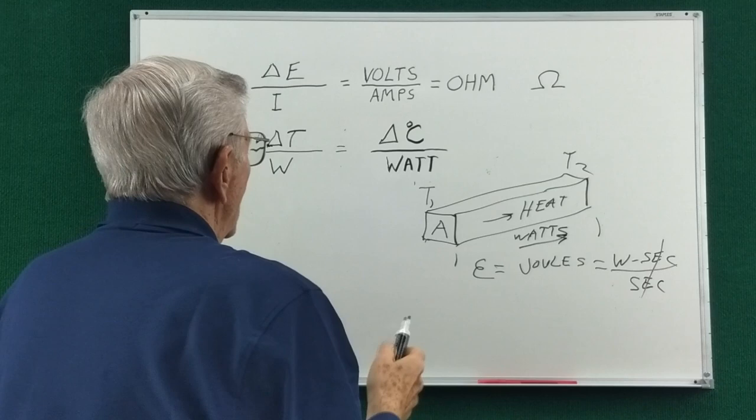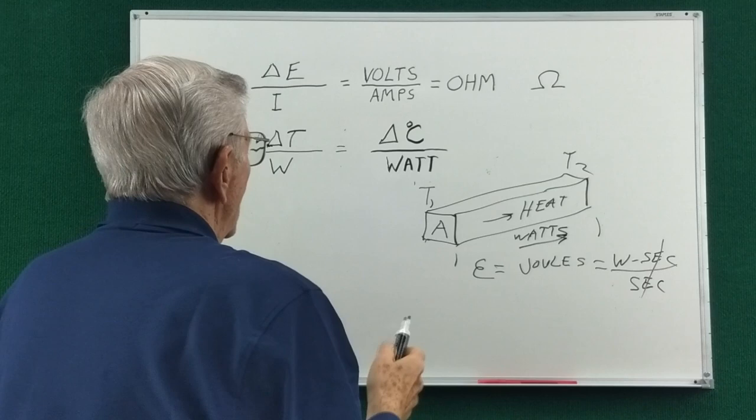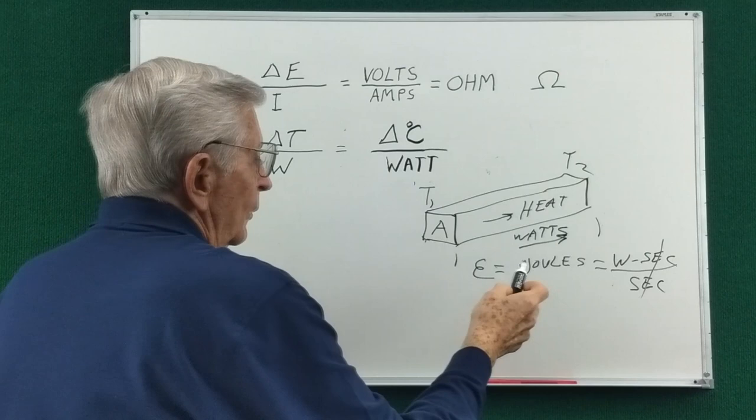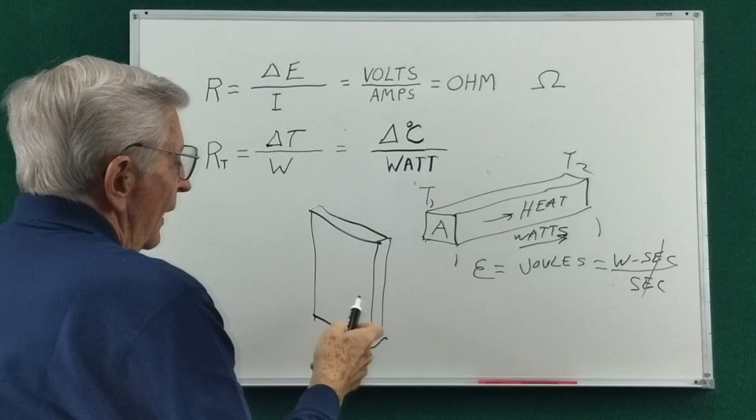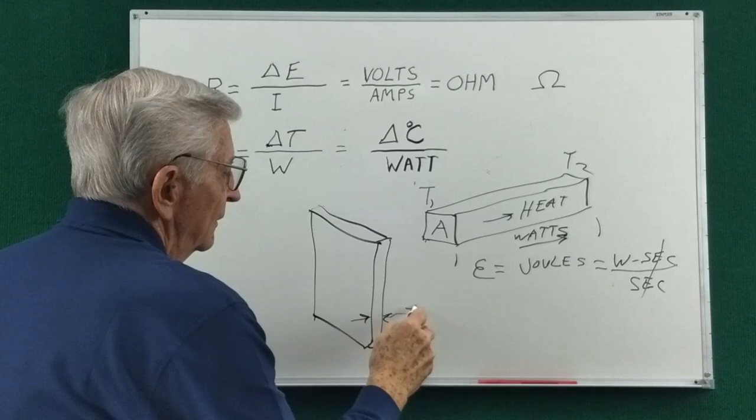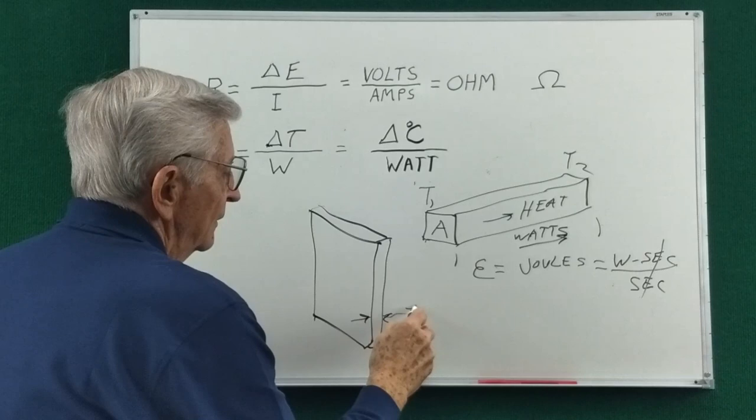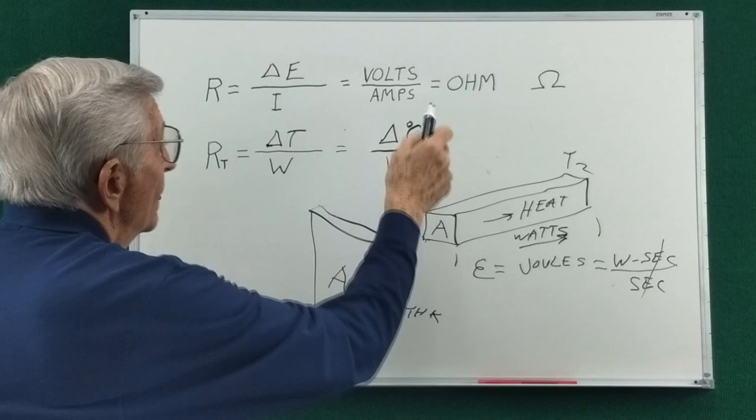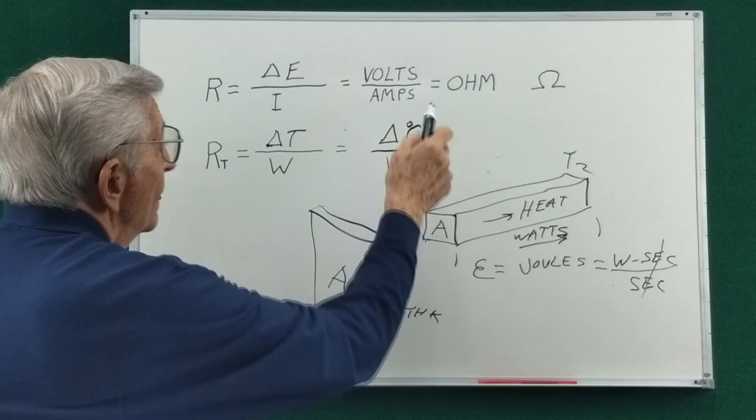Now this is a slow process due to the mass of the thermal conductor. And in normal situations, when we're talking about thermal flow, we have big areas and very short lengths. So sometimes it'll be referred to as thickness rather than length. But it's still an area. So the electron flow happens instantly. But heat flow takes time.